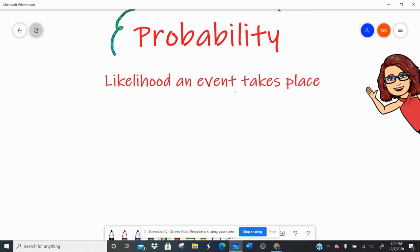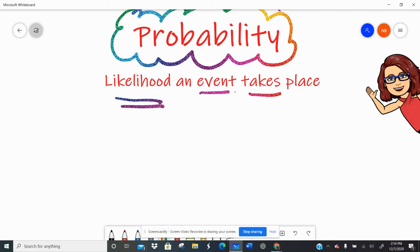Well hello all of you beautiful people. We're going to talk about probability today. Probability is the likelihood an event takes place. It's kind of just a fancy saying for the odds of something happening, right?